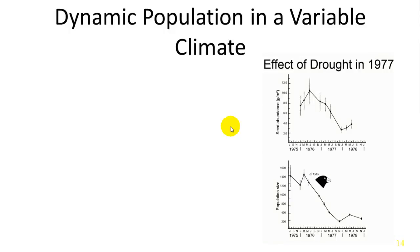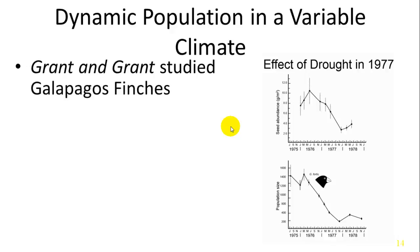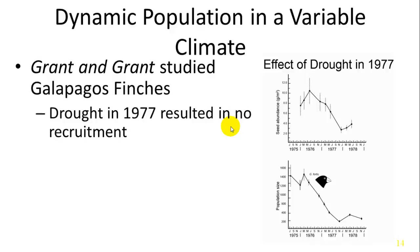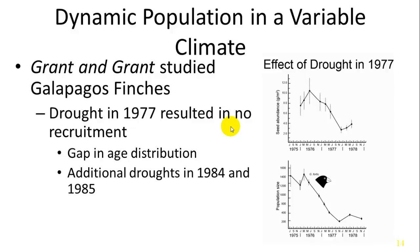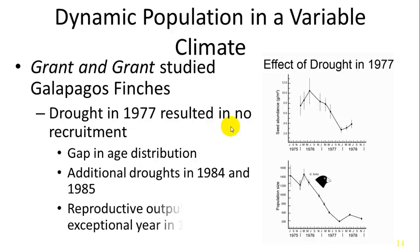Population and climate are often linked. Drastic climate changes, such as drought, can lead to population declines. Grant and Grant studied Galapagos finches and found that drought in 1977 and subsequent droughts led to age gaps where no eggs survived during those drought periods. This was offset by an exceptionally moist year in 1983, when they had lots of nestlings.